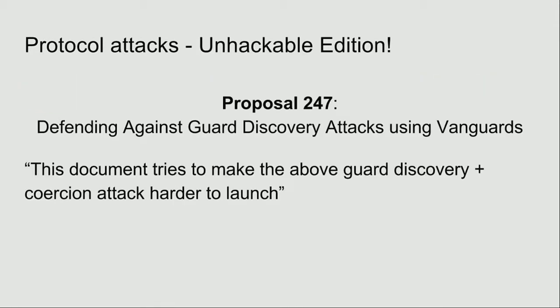But Tor is working hard to prevent these attacks. Proposal 247 — 'defending against guard discovery attacks using vanguards.' If guards aren't enough, they'll have vanguards. They basically put more guards ahead of your guards, creating a tiered selection where each layer is guarding the other guards. Before, you had to attack one guard; now there are guards on guards on guards you need to attack. It kind of exponentially increases the cost of the attack. It's being looked at and implemented, and when it goes through it'll be good. But at the moment there's still that weakness.